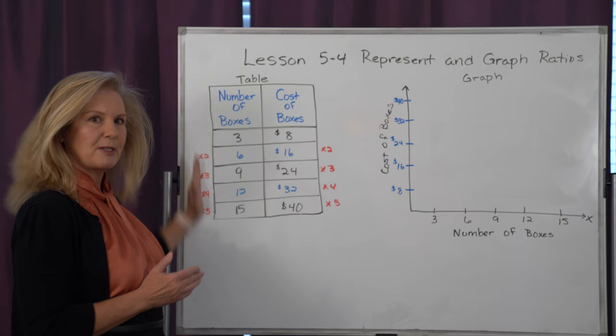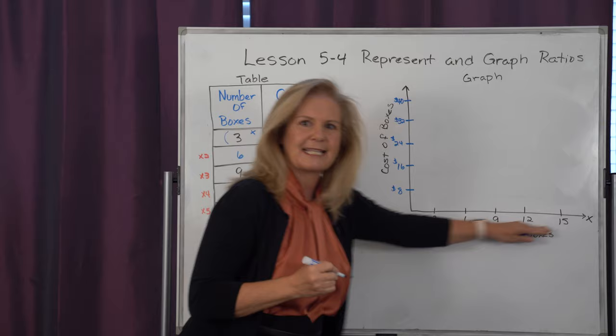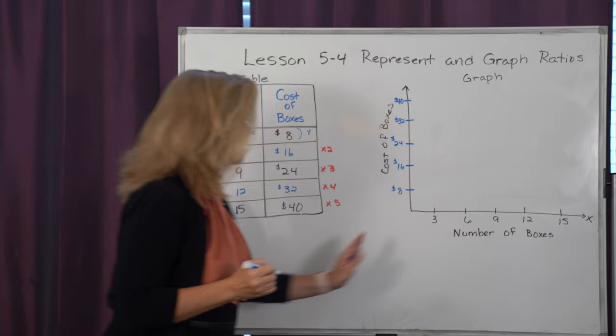Now something magical happens when I do that. Because what I start to see is I have these two numbers, and we can look at those as an ordered pair, where the first number represents my x value, which is this axis on my graph, and the second value represents my y value, which is this axis on my graph.